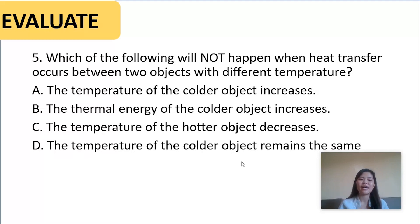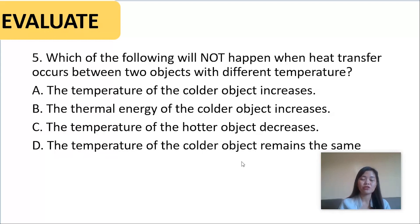And finally, number five: which of the following will NOT happen when heat transfer occurs between two objects with different temperatures? A — the temperature of the colder object increases, B — the thermal energy of the colder object increases, C — the temperature of the colder object decreases, or D — the temperature of the colder object remains the same.